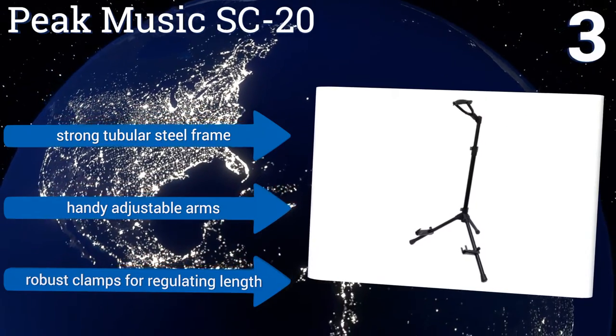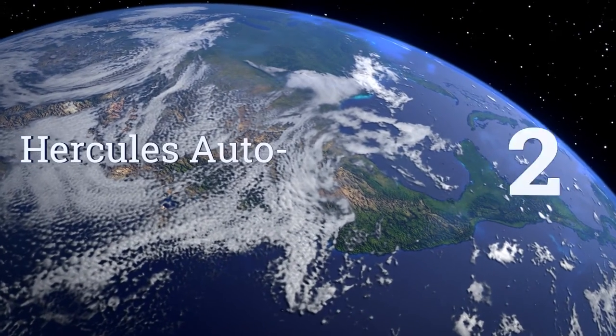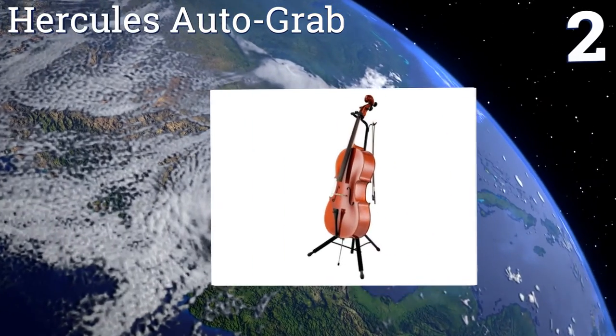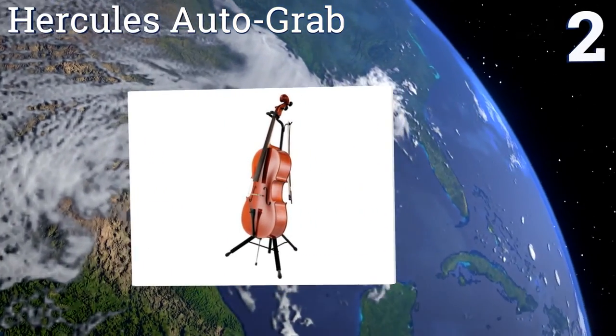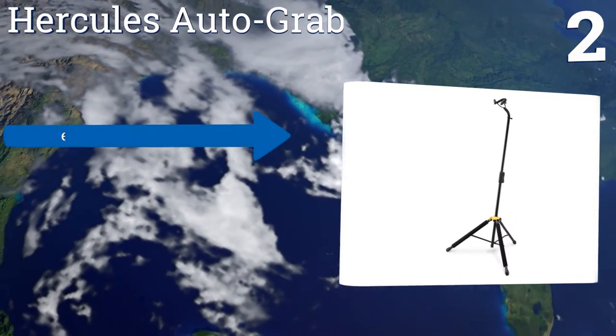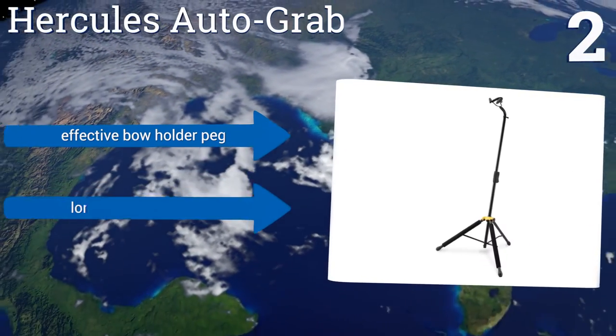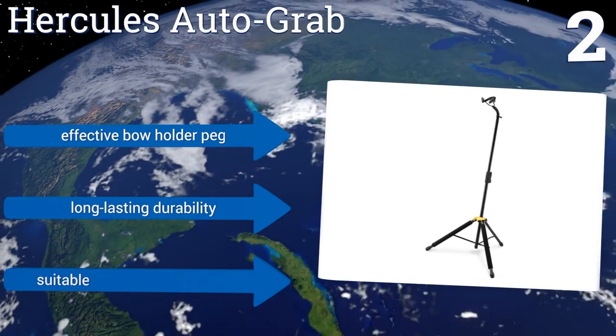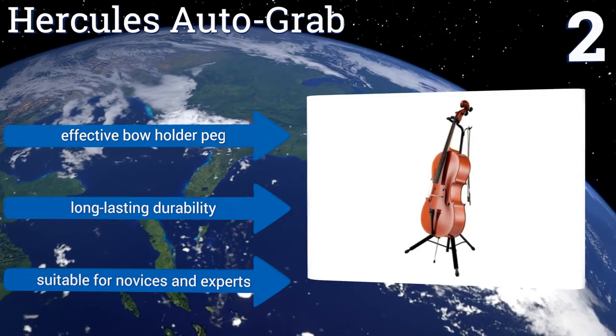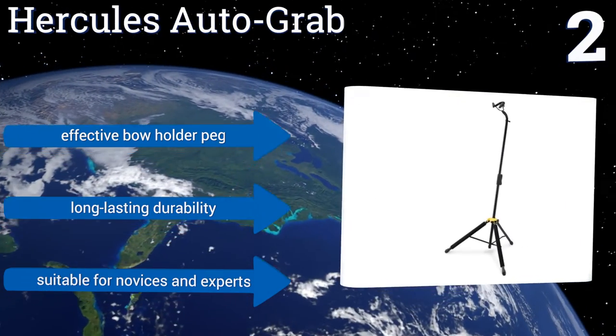At number two, the top part of the Hercules AutoGrab is detachable and curved, adding a bit of versatility to this quality stand. The weight of your cello activates its locking mechanism, so simply grab the neck and lift it up to remove it from the stand. It includes an effective bow holder peg and offers long lasting durability. It's suitable for novices and experts.